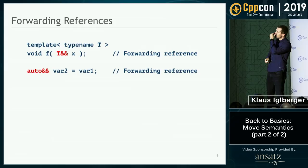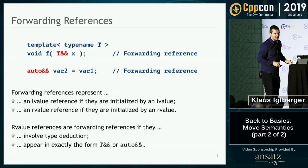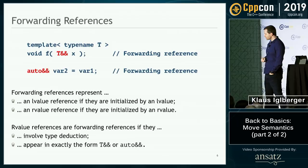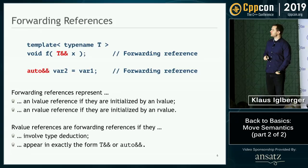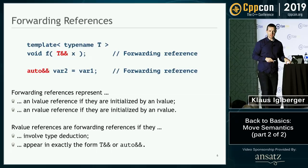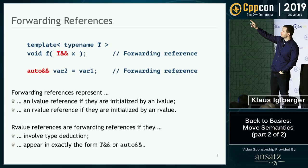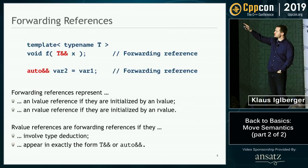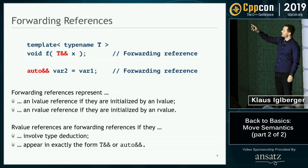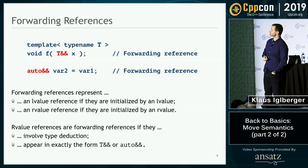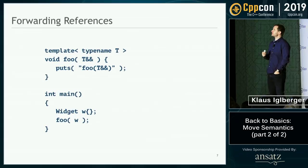Let me explain what forwarding references are, because they are indeed special. A forwarding reference represents an l-value reference if you pass it an l-value — an l-value being something with a name — and it represents an r-value reference if you give it an r-value. So it adapts: it becomes whatever you initialize it with. An r-value reference is in fact a forwarding reference if it involves type deduction — specifically either a function template or auto — and only if it appears in exactly the form T&&.